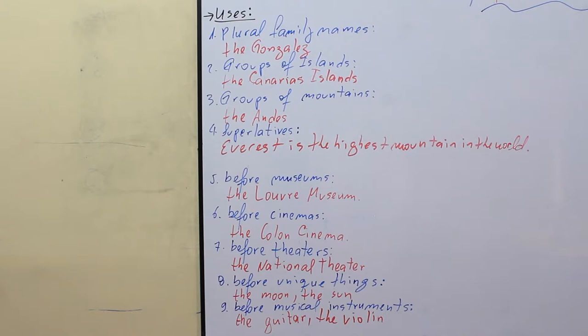Number six, before cinemas, for example, the Cologne Cinema. Another one, before theatres, for example, the National Theatre.